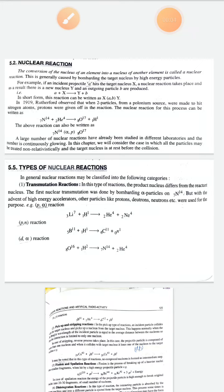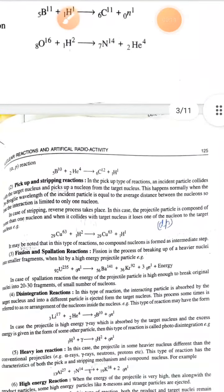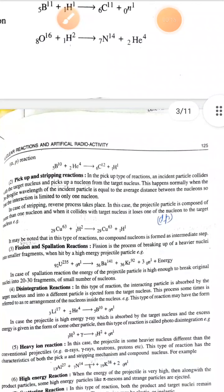Hello students, as we have already discussed about nuclear reactions and certain types in the previous lecture, in this lecture we will discuss other types of nuclear reactions. Our first type is the pickup and stripping reaction. When we collide an incident particle on a target nucleus, it picks up a nucleon from the target nucleus and a new particle is produced.